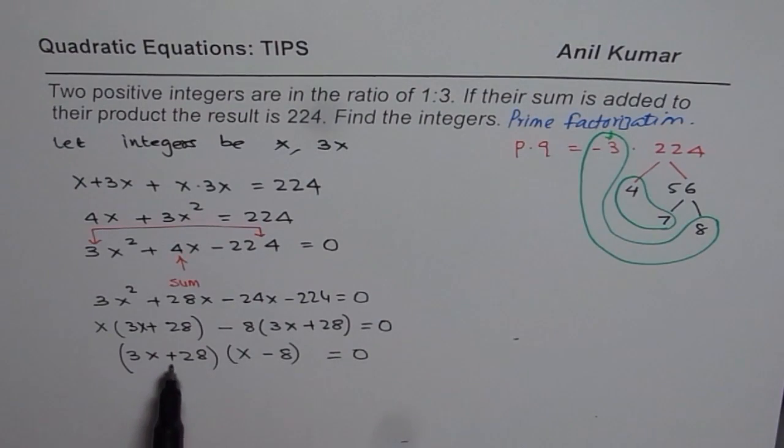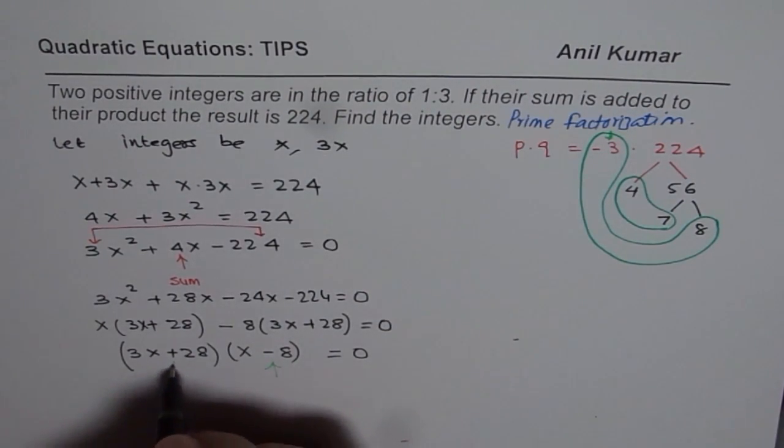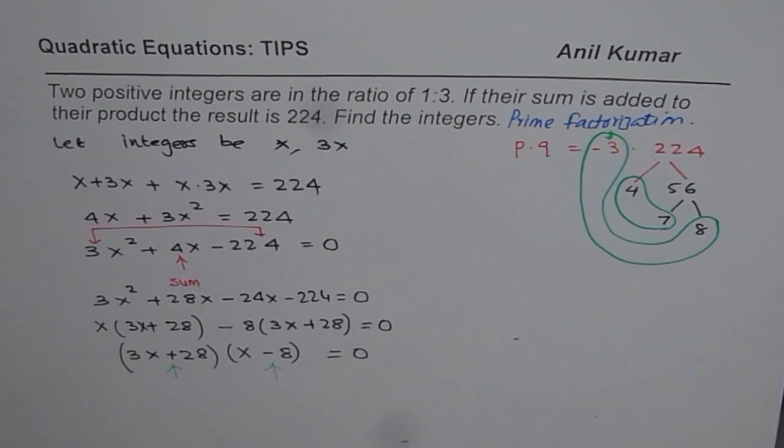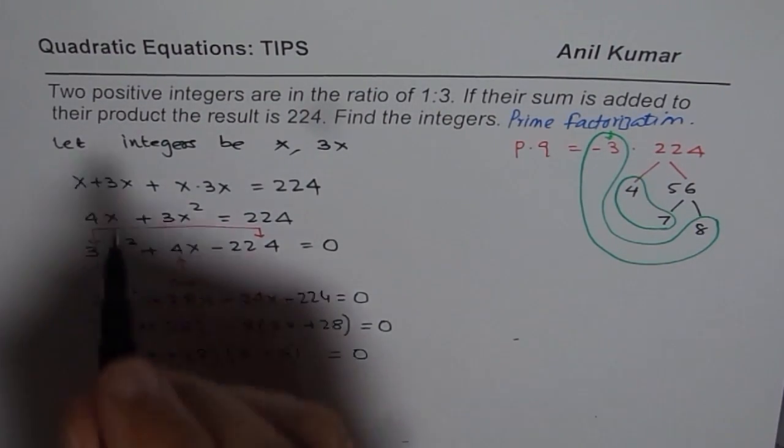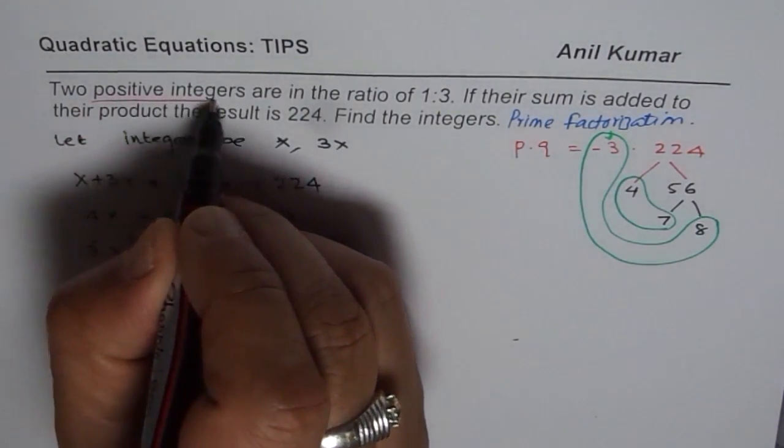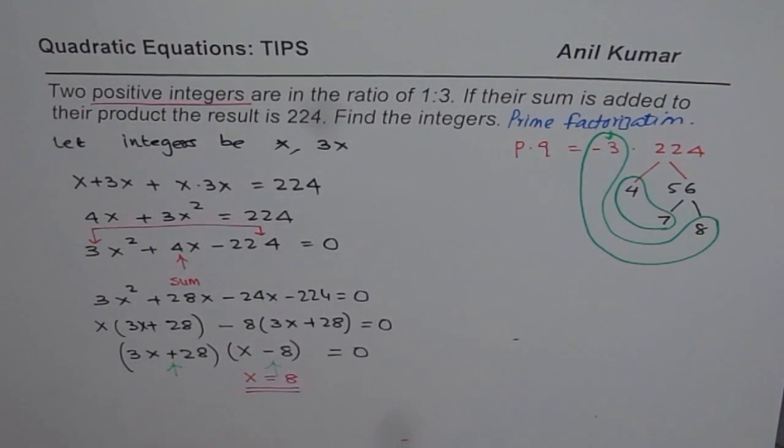So that gives us two possible solutions. One of the solution is when x minus 8 is 0. The other one is when 3x plus 28 is 0. So the first one gives us negative number. We are looking for positive integers. And therefore we will go with this solution which is x equals to 8.